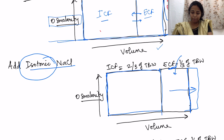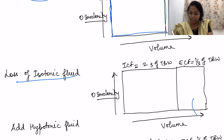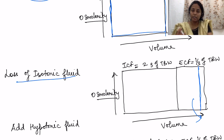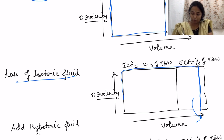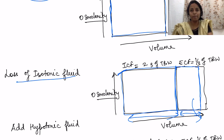With a similar logic, if there is loss of isotonic fluid, the loss occurs from the ECF compartment, so ECF volume reduces. Since it is isotonic, no fluid movement occurs from ICF to ECF or ECF to ICF, as osmolarity is the driving force for water. So there will be only a reduction in the volume of ECF while the ICF compartment remains the same. The ECF compartment has reduced while osmolarity on the y-axis remains the same as before.